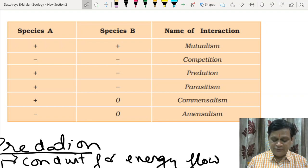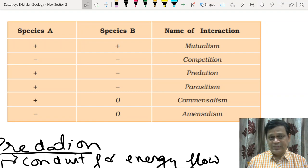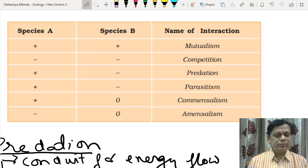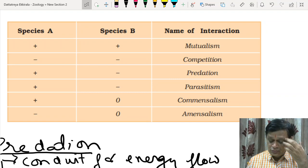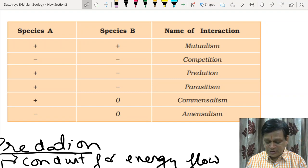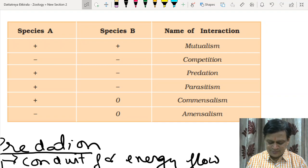In predation, the predator is benefited and prey is harmed. In parasitism, parasite is benefited and host is harmed. In commensalism, host is not affected and commensal is benefited, plus zero. In amensalism, minus zero interaction.